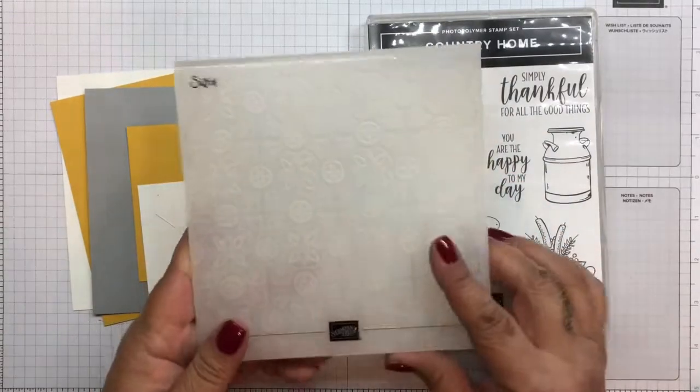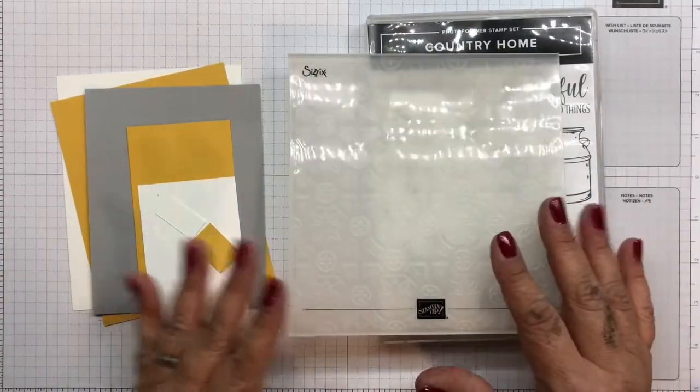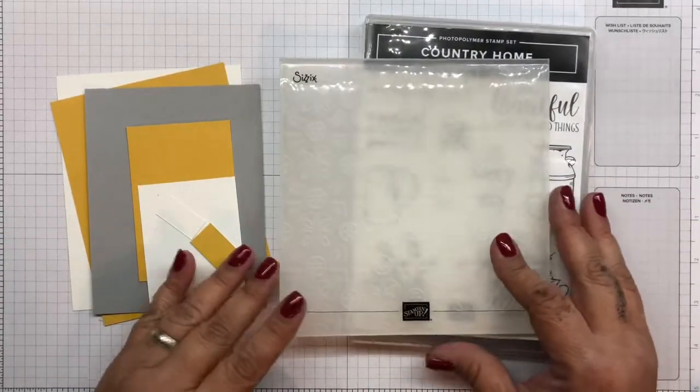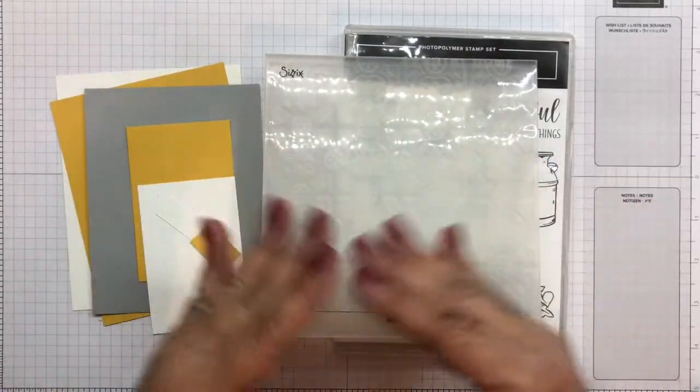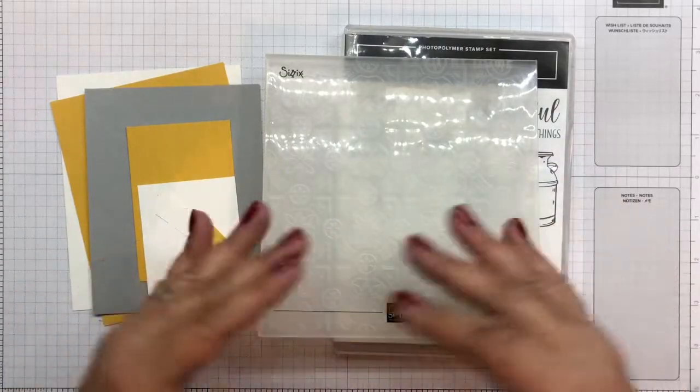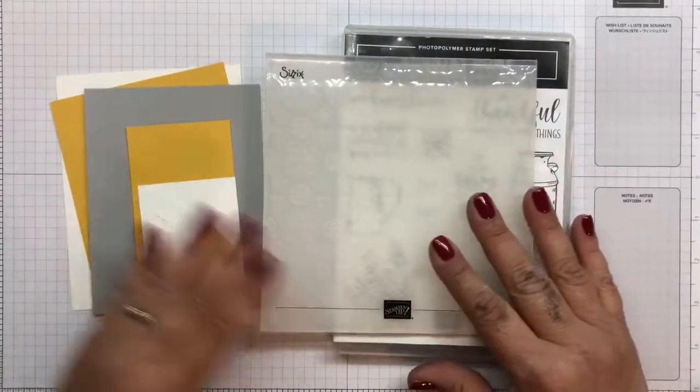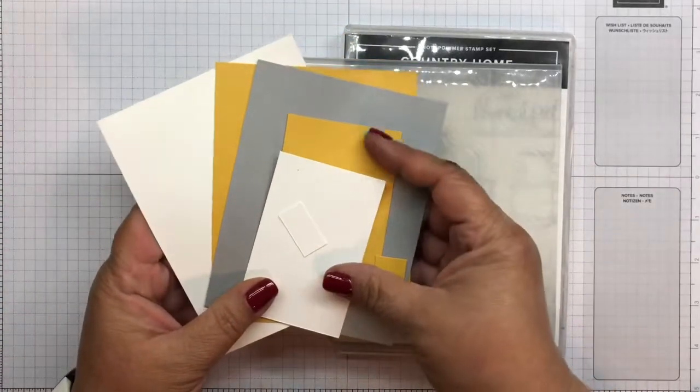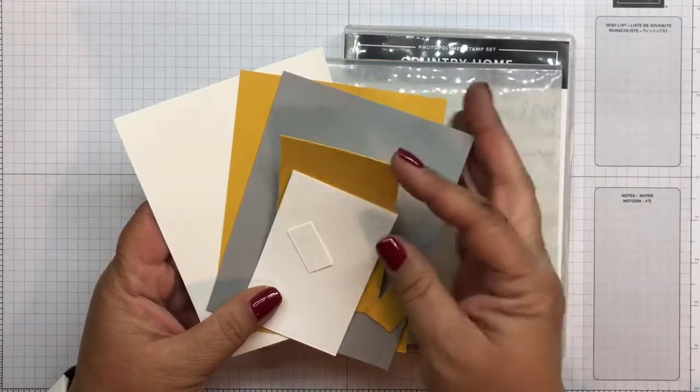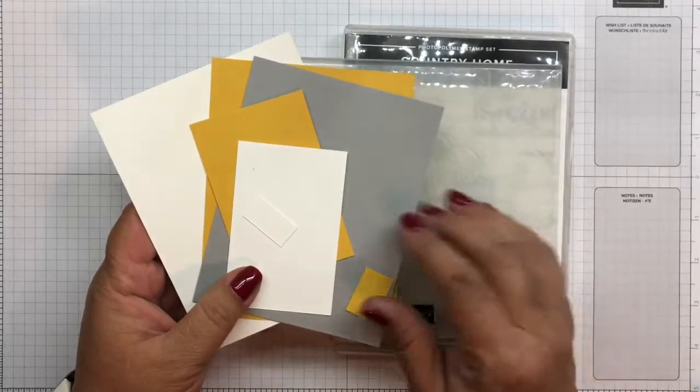But we're going to create a little fun technique with this. I know you guys have probably seen this before, but for those that are new to stamping and embossing, we're going to create, instead of doing a whole sheet, we're just going to emboss part of our sheet. We're going to be working with Whisper White, Bumblebee, and this is Smoky Slate. Alright, so let's go ahead and let's get started.